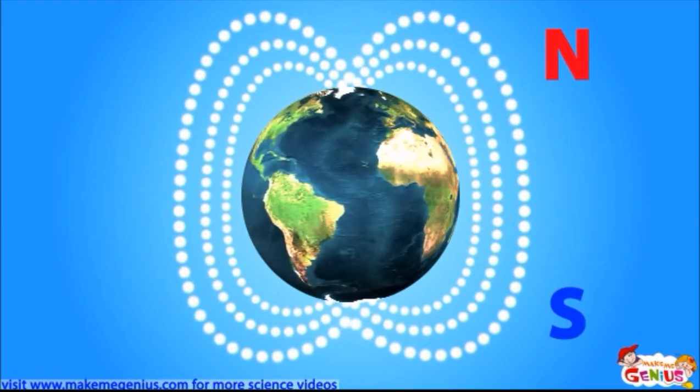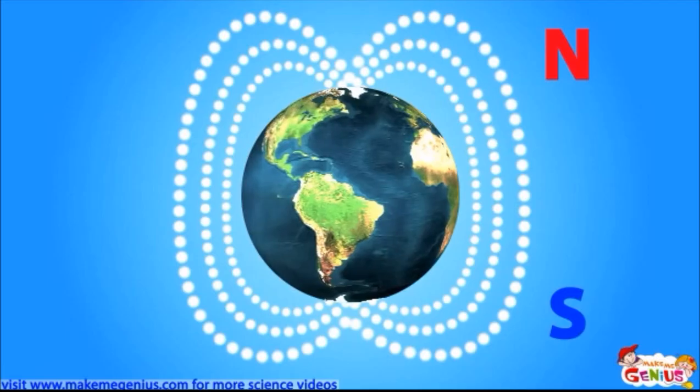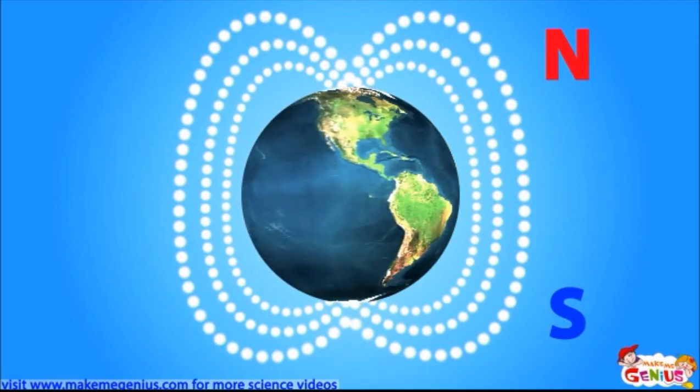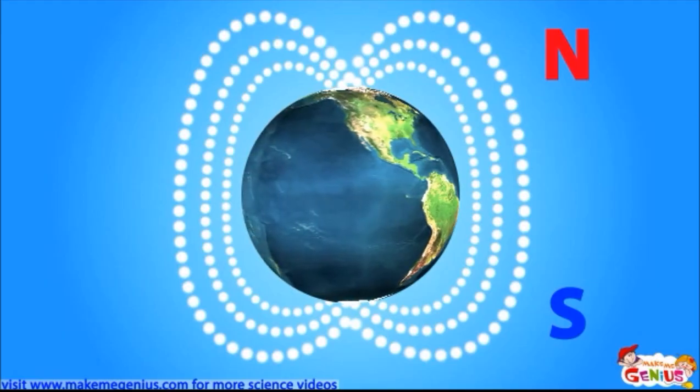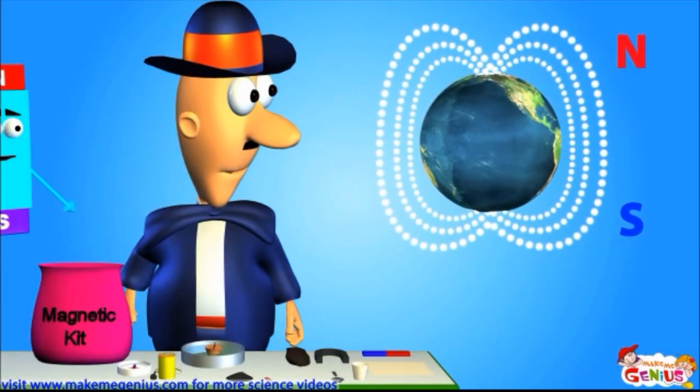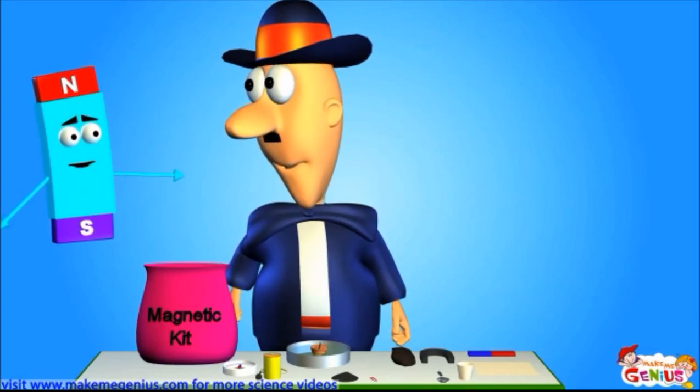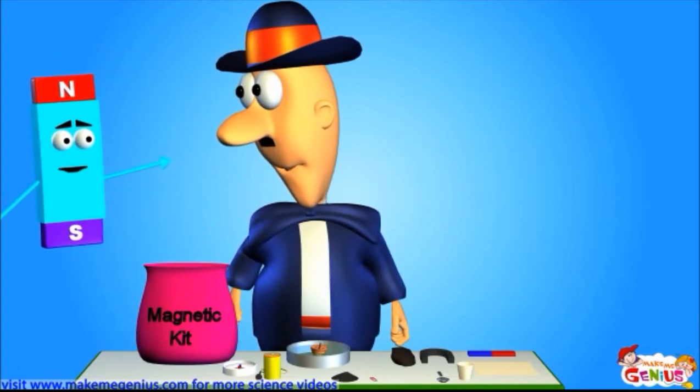Yes, the Earth is also like a big magnet. Earth's magnetic field is spread all over. This magnetic field affects the needle of the compass and makes it point north or south. A magnet always has two poles, and you might have already guessed it, but those two poles are named the north pole and the south pole.